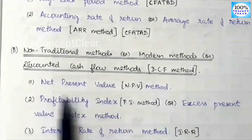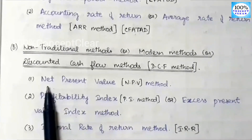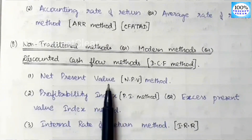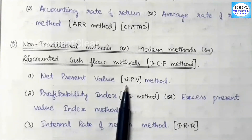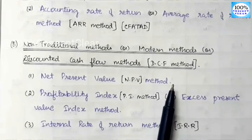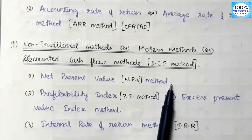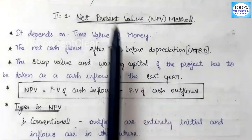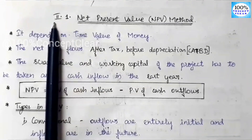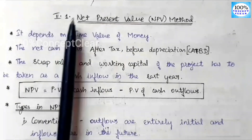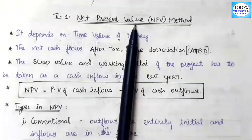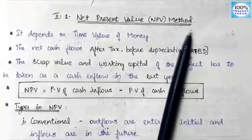The first method is the net present value method. This is the second category of methods — the non-traditional method — and the first method within it is the net present value method, or NPV method.